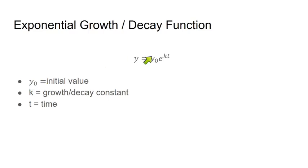So y naught, the initial value, times e, which is a constant - it's a button on your calculator, not a variable - raised to the kt, where k is the growth or decay constant, and t is the time.